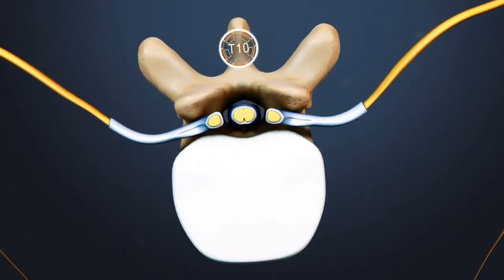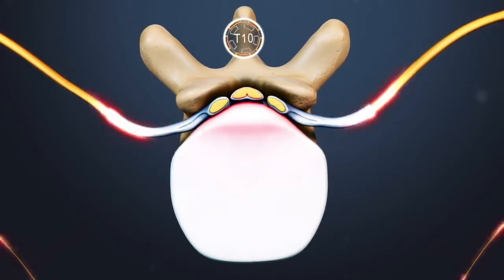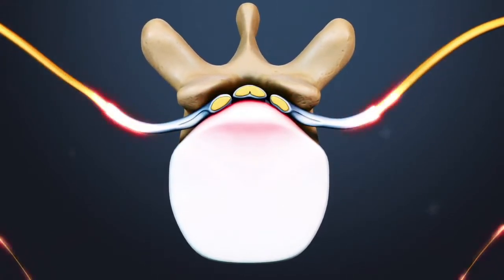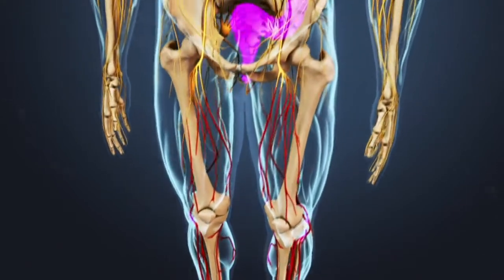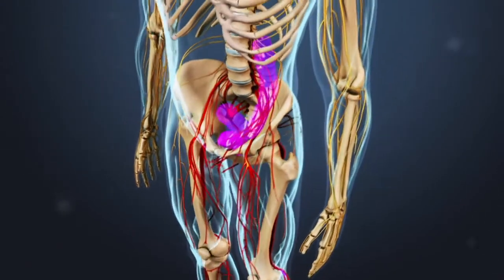If a thoracic disc herniates back into the spinal cord area, it may cause numbness below the level of cord compression, as well as difficulty with walking or balance, or possible loss of bowel and bladder control, a condition called myelopathy.